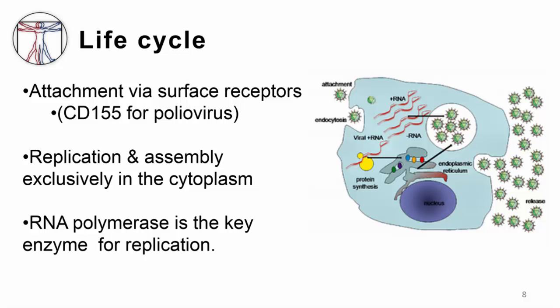Since enteroviruses are RNA viruses, their life cycle is typical of RNA viruses. They attach to the cell surface via specialized receptors — for instance, CD155 for polio — and are endocytosed. Replication and assembly of the virus occurs exclusively in the cytoplasm, and the viral RNA polymerase is the key enzyme needed for replication. The virus is subsequently packaged and released, and the release of viruses causes cell death. The viral particles are immediately infectious.